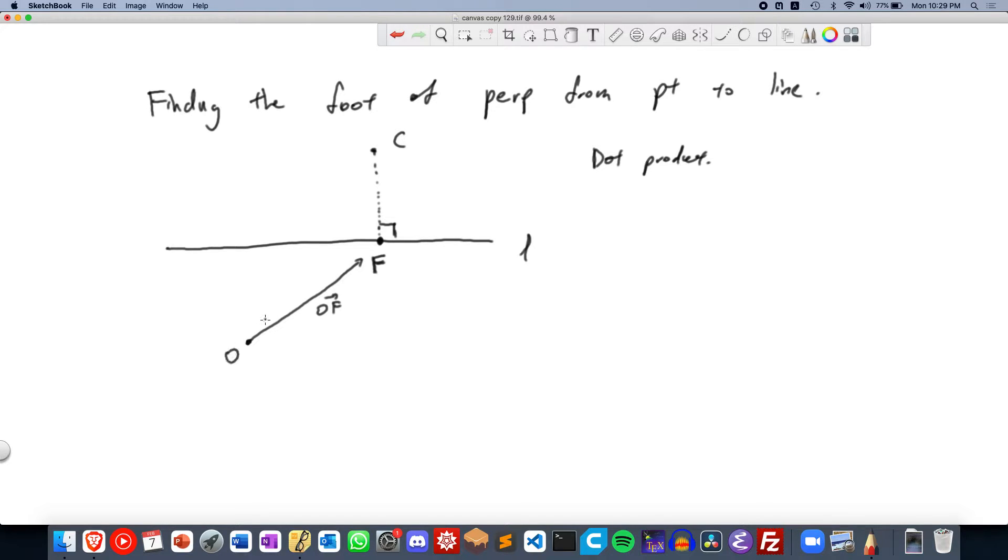where this is the origin, so since we know that F lies on a line, we can write that OF equals to A plus lambda B for some real number lambda. And do note that this is different from the definition of a line.